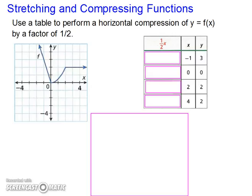Stretching and compressing functions. Use a table to perform a horizontal compression of y equals f(x) by a factor of 1/2. We also know it's a compression because we're going by a factor that's between 0 and 1, not more than 1. If it was more than 1, we would be stretching. So, we're going to be multiplying it to our x value because it's horizontal. When we're dealing with horizontal, we mess with our x's. We leave our y's alone. So, we're going to multiply each of our x values by 1/2.